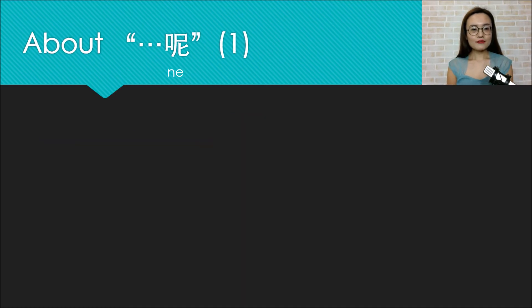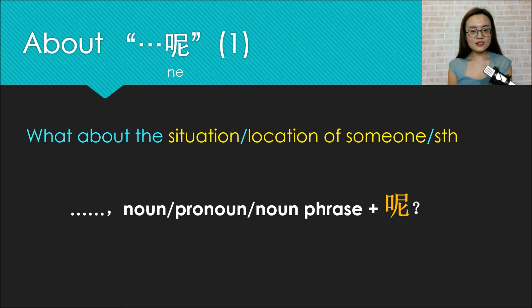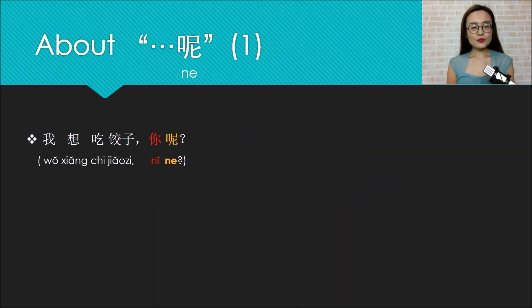So if there is a previous description at the beginning, and you want to ask what about the situation or location or someone else or something else, you can use this kind of sentence structure. A previous description, and then noun or pronoun or noun phrase plus ne in the end.